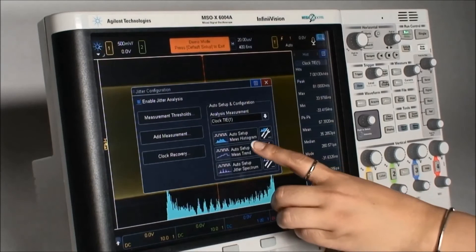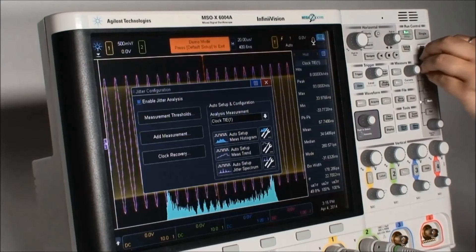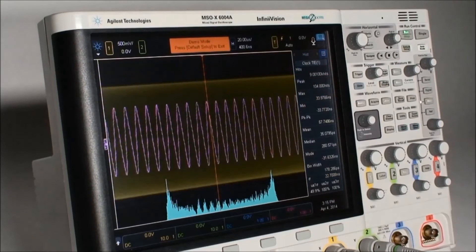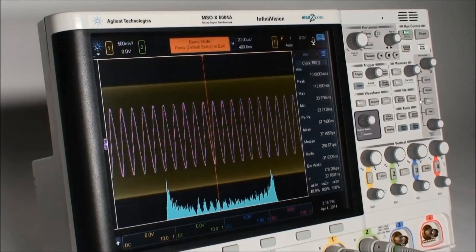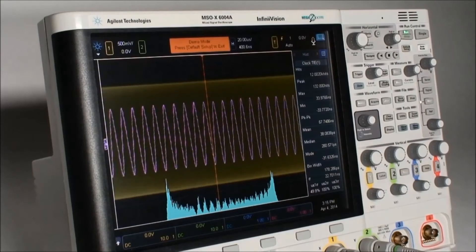Now let's enable the jitter trend waveform. The purple waveform is time correlated to the captured signal. Notice that the jitter trend has a sinusoidal modulation, which indicates that periodic jitter is affecting the signal. We can use the built-in measurements to determine the frequency of the trend line.